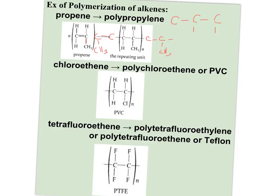Chloroethene is just ethene with a chlorine substitution — one chlorine. If it were dichloroethene, there would be two chlorines. This forms polychloroethene, or what you probably know as PVC — the white plumbing pipe you often see. A third really common one is tetrafluoroethene, which has four fluorines, and it forms polytetrafluoroethylene — more commonly known as Teflon.